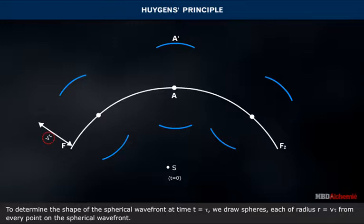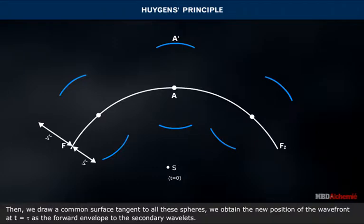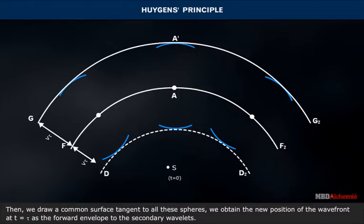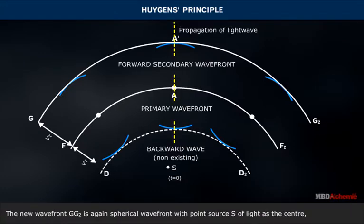We then draw a common surface tangent to all these spheres. We obtain the new position of the wavefront at t equals tau as the forward envelope to the secondary wavelets. The new wavefront GG2 is a spherical wavefront with the point source S of light as the center.